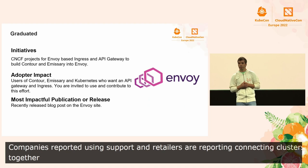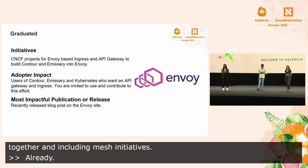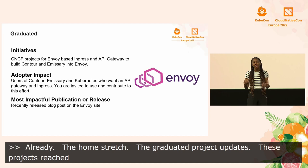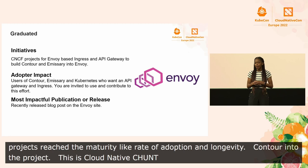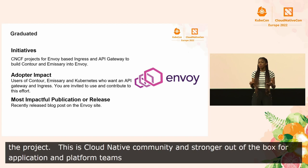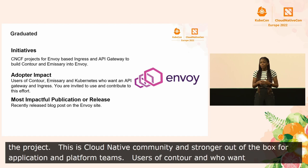Now for the graduated project updates — these projects have reached CNCF-defined criteria of maturity, including rate of adoption and longevity. Starting with Envoy: Envoy just introduced Envoy-based Ingress and the API gateway to build Contour and Emissary into the project. This will help reduce redundant work happening in the cloud-native community and set up Envoy to be a much stronger out-of-the-box solution for application and platform teams. Users of Contour, Emissary, and Kubernetes who want an API gateway and Ingress are invited to contribute. Be on the lookout for a blog post about this work from the Envoy team here at KubeCon.